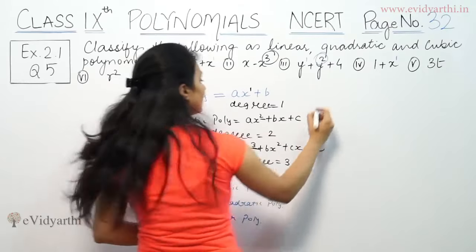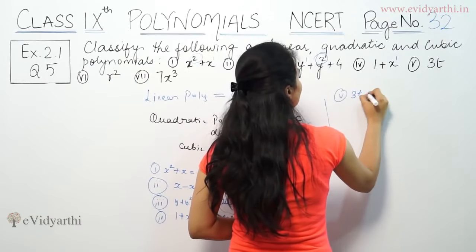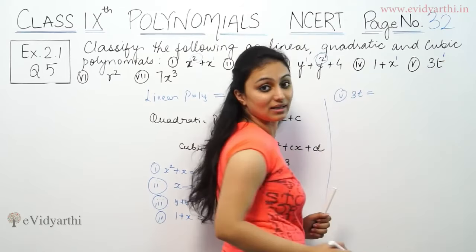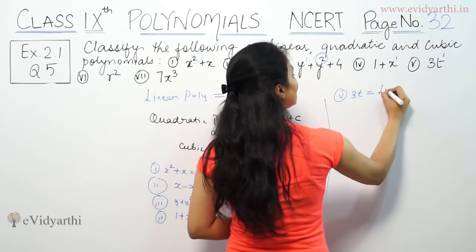Then, part number 5 is 3t. Highest power is 1. So in this case, it is a linear polynomial.